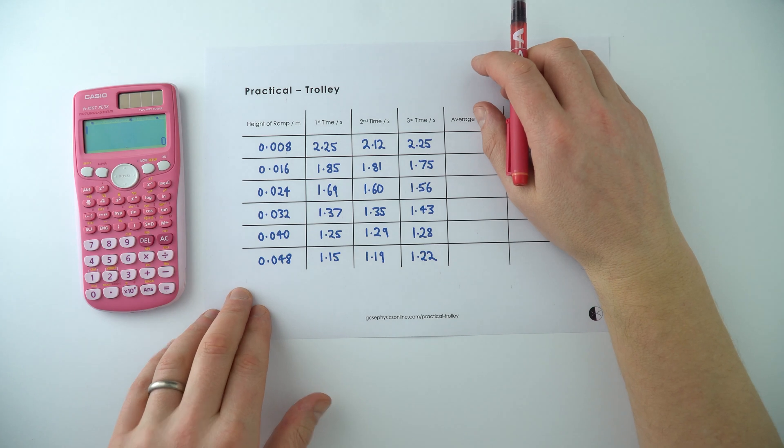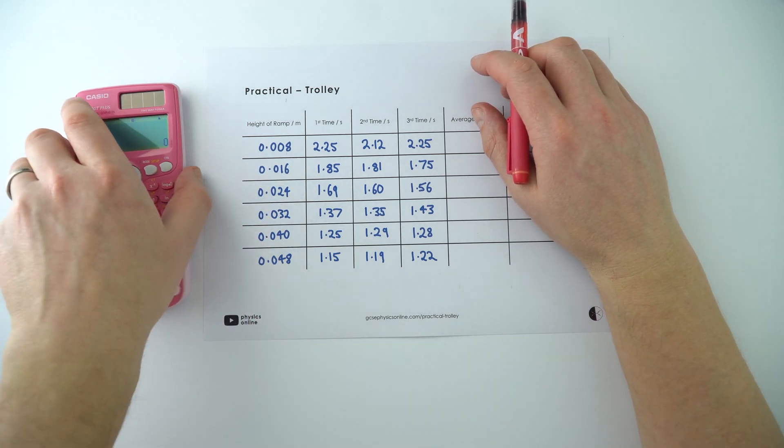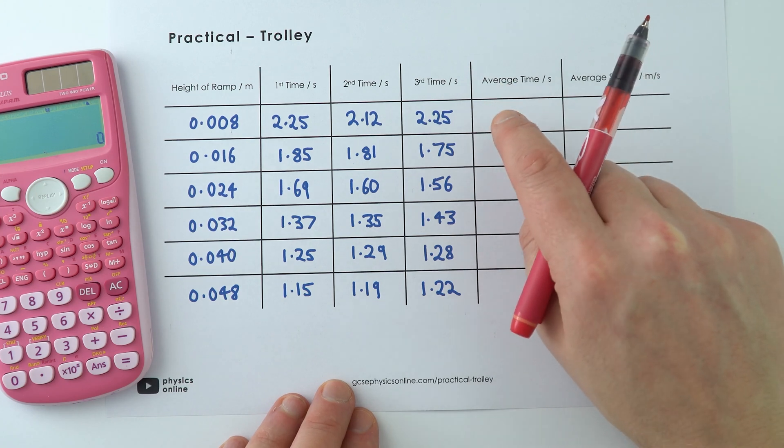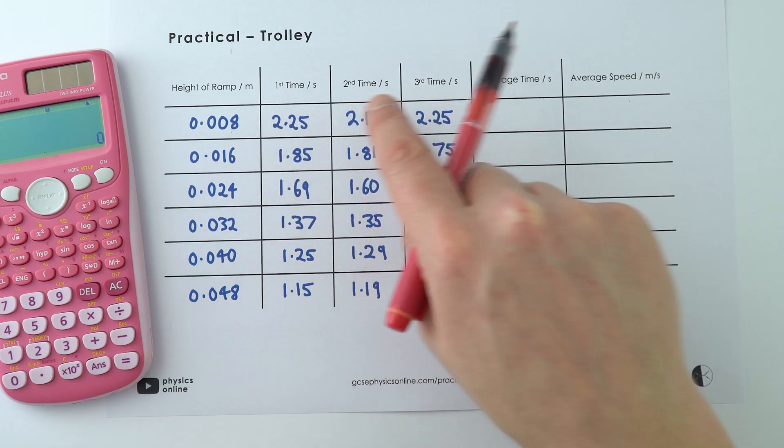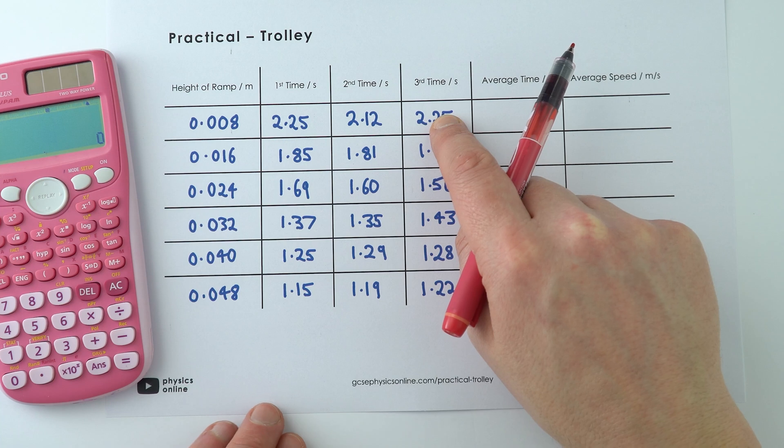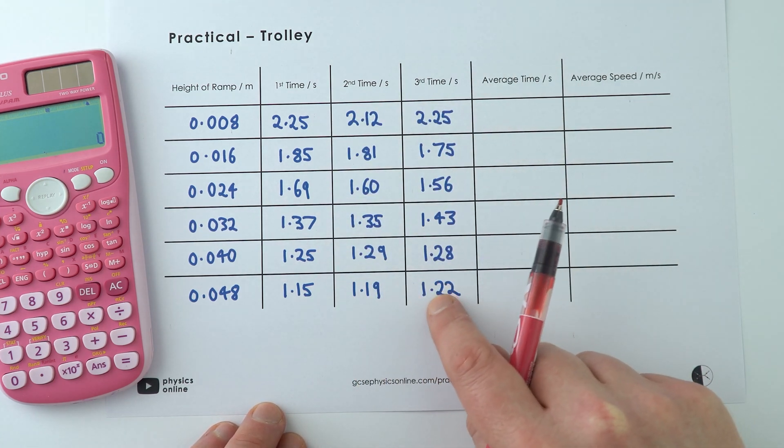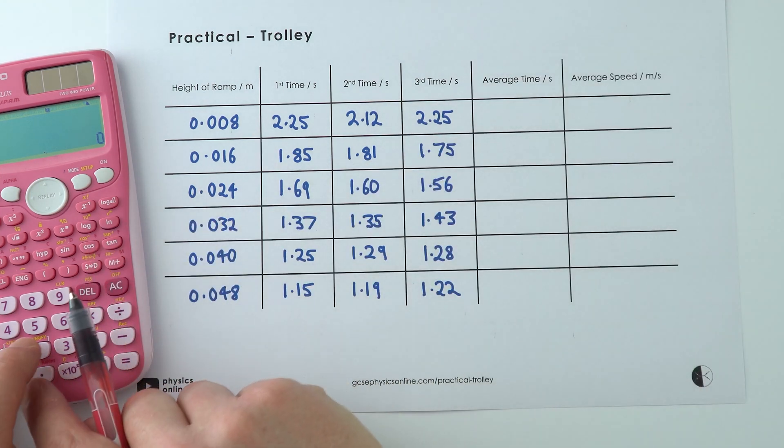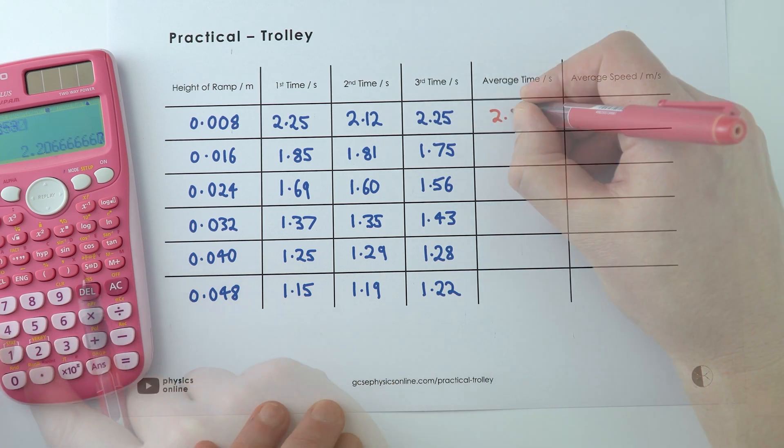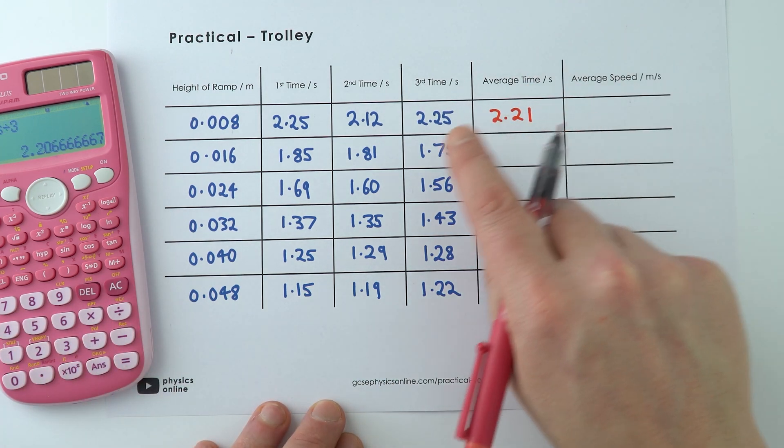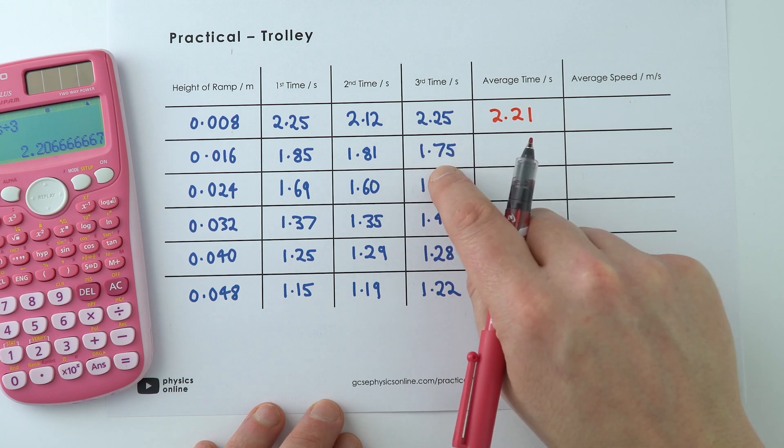This is all the data I took for different heights of ramp. What I can look at now is working out the average time, and it's going to be the mean value, which is just equal to all of these values added up and divided by 3. Looking through my data set here I can't see any that don't fit the pattern, so I don't think I have any anomalous data. I'm now going to work out the averages. When I do that I'm just going to give all of my answers to two decimal places just like my raw data over here.